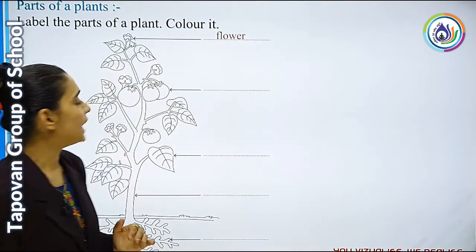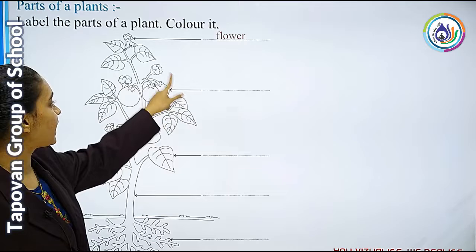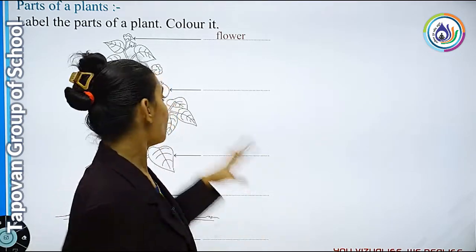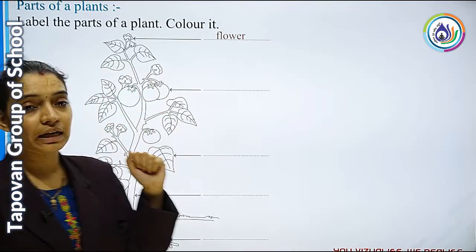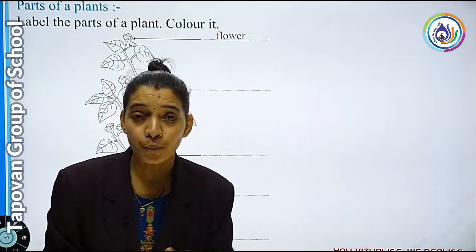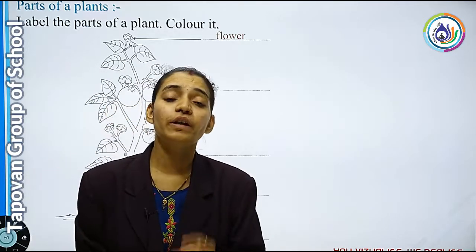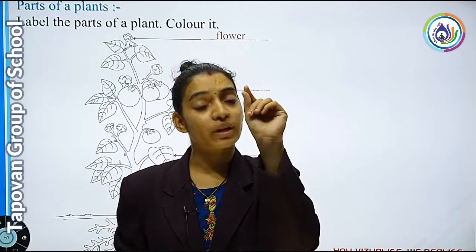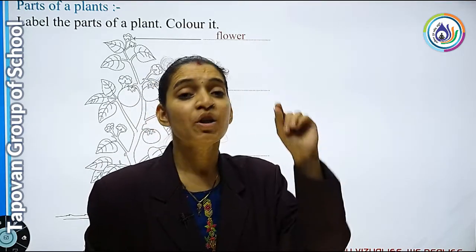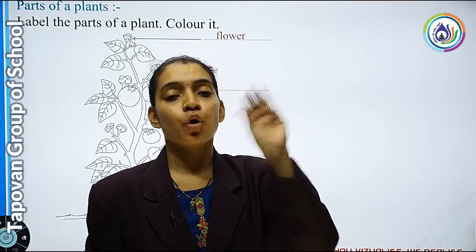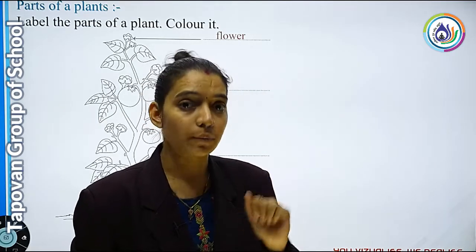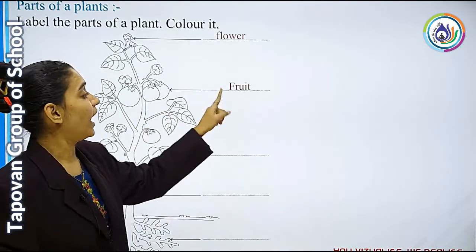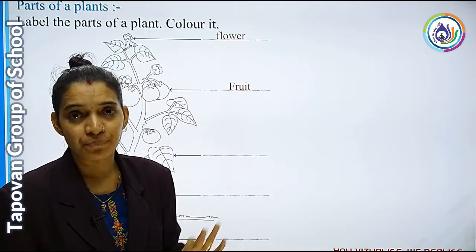Next देखते हैं — तो next आपको क्या दिखाई दे रहा है? Fruits. आप कोई भी Plant लो, कोई भी Tree लो, तो Plant के ऊपर या Tree के ऊपर Fruit कब लगता है? जब पहले छोटा सा Flower निकलता है और उसमें से फिर Fruit बनता है. तो next part क्या है? Fruit — F-R-U-I-T.